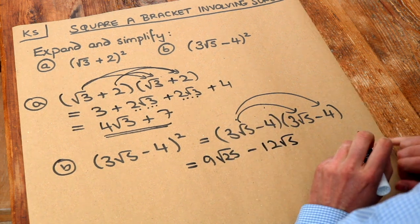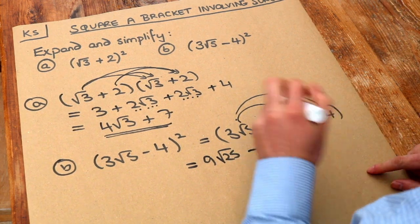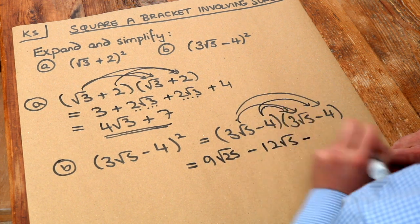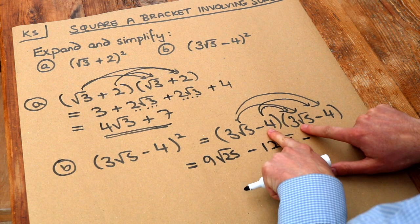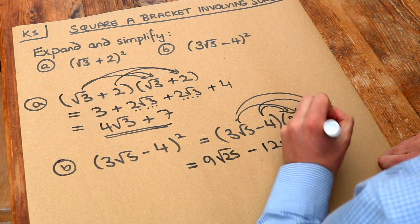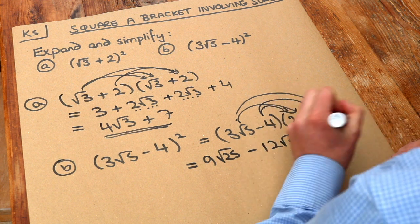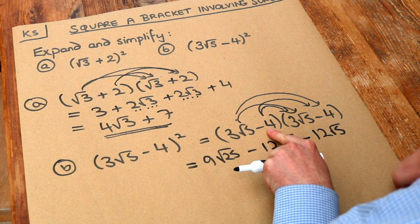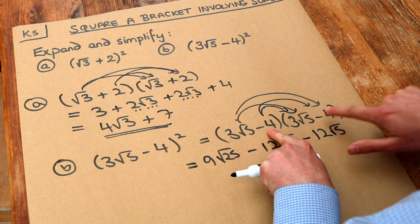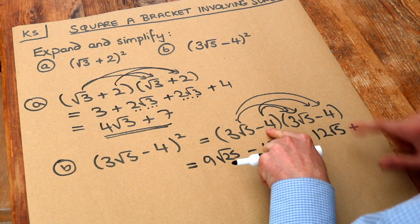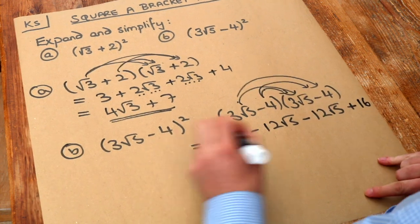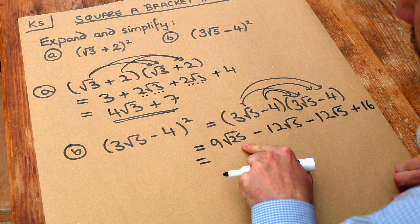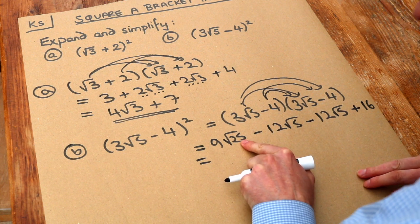Then we do the second thing in the first bracket multiplied by each thing in the second. Negative times positive is negative, giving us minus 4 times 3: 4 times 3 is 12, and the surd part is root 5. Finally we do negative 4 times negative 4 — negative times negative is positive, so make sure you get the sign right: 4 times 4 is 16. Now let's simplify: the square root of 25 is a perfect square, so it's just 5.